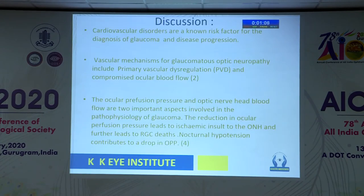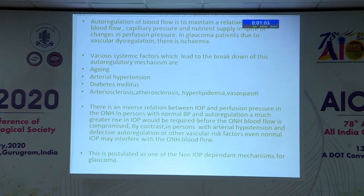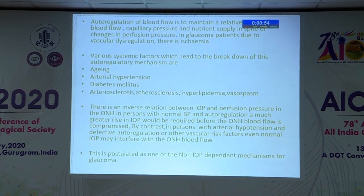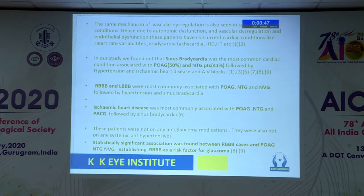Coming to the discussion, the vascular mechanisms of glaucoma include PVD and compromised ocular blood flow. Autoregulation is necessary to maintain constant ocular perfusion pressure. This autoregulation is lost in cardiac conditions as well as conditions like aging, arterial hypertension, and diabetes mellitus. This is one of the postulated non-IOP dependent mechanisms for glaucoma. The same mechanism of PVD is also seen in concurrent cardiac conditions.